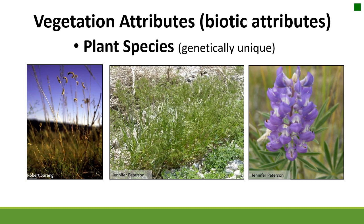We'll start with plant species. A plant species is just a genetically unique plant, and we have hundreds, maybe even thousands of plant species on rangelands here in the West. You can see from these pictures three plants you should have memorized for this class — blue grama, cheatgrass, and tailcup lupine. Each one is its own plant species and could be a unit when we're measuring any kind of vegetation attributes on the range.